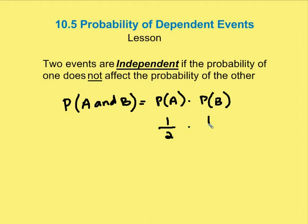times the probability that I flip another head on the second try. So the probability of flipping two heads in a row, or A and B, is going to be one over four. Those are independent events — the outcome of the second is not affected by the outcome of the first.